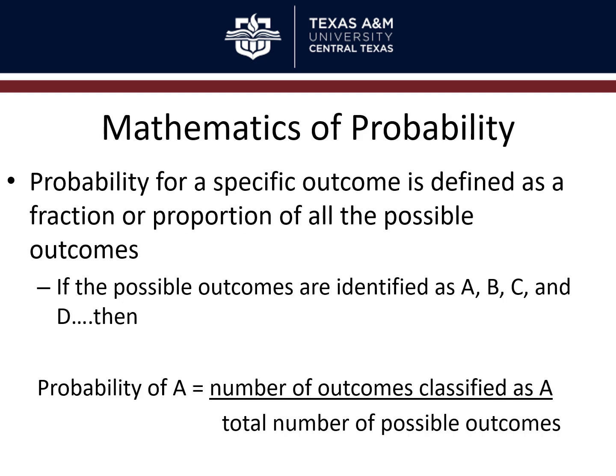In terms of the mathematics of probability, probability for a specific outcome is defined as a fraction or proportion of all the possible outcomes. So if all possible outcomes are identified as A, B, C, and D, then the probability of A would be equal to the number of outcomes classified as A divided by the total number of possible outcomes — all the A's, B's, C's, and D's added up.